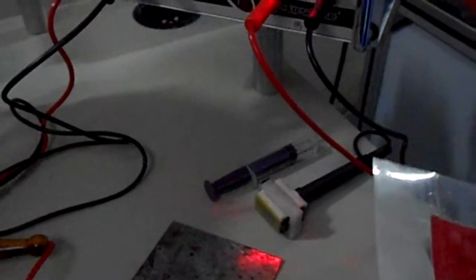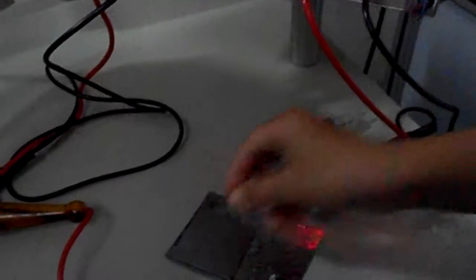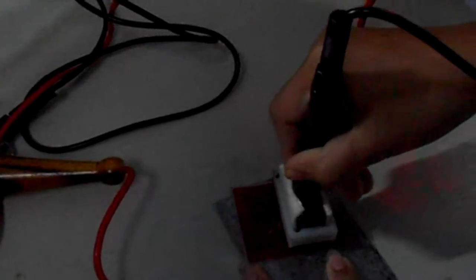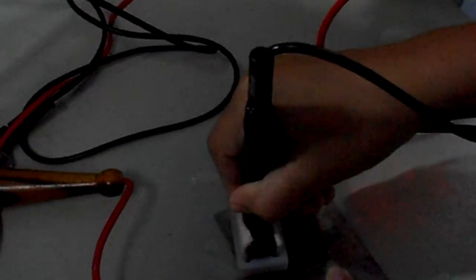Now put the stencil on the job to be marked. With the help of marking head, squeeze it two to three times. Now you will see the marking appears on the job.